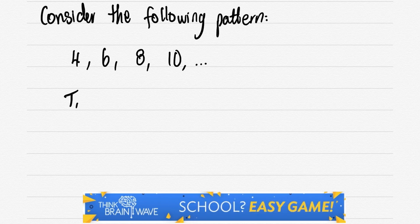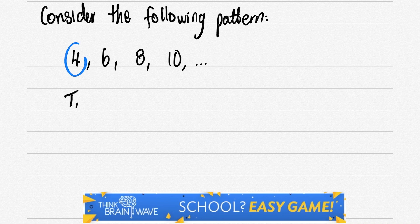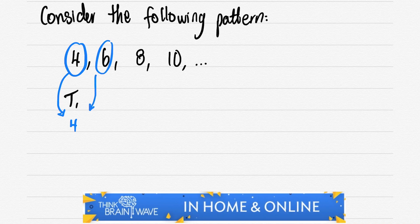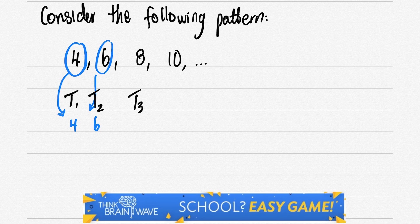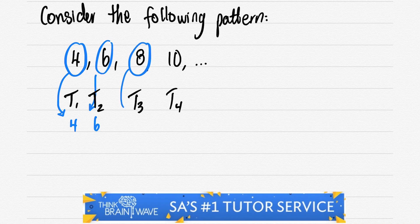We see that the first term is 4, the second term is 6, the third term would be 8 and the fourth term would be 10. It's very important that we notice this and from here we'll move forward.